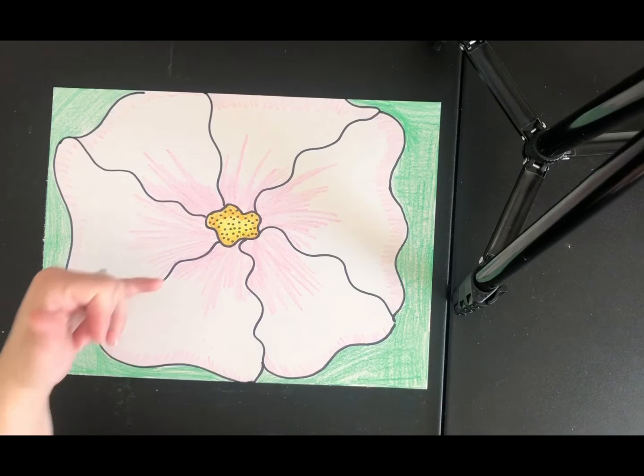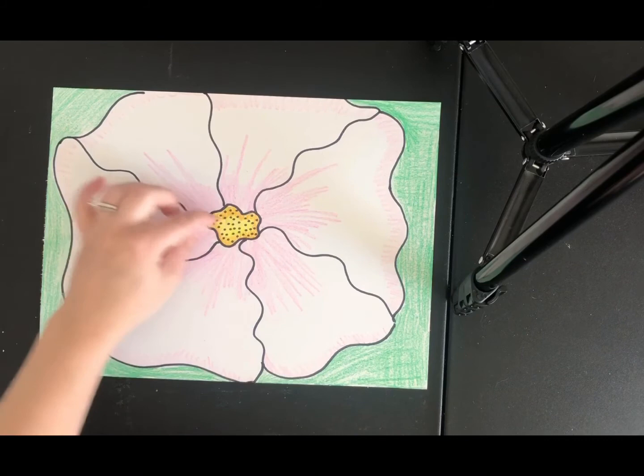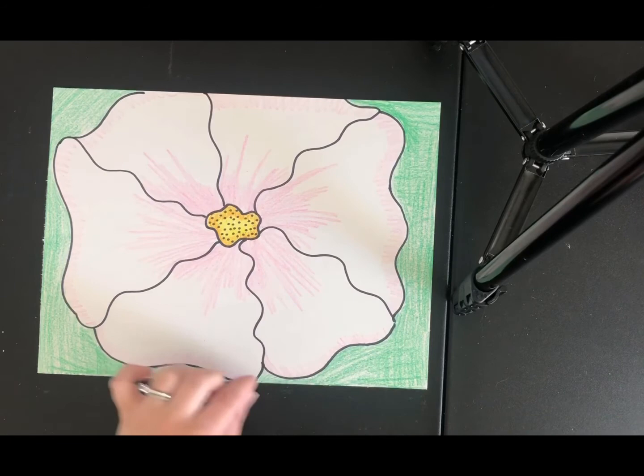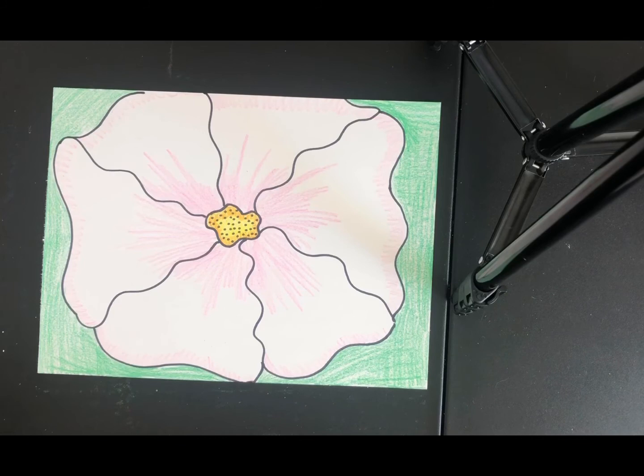So that is my Georgia O'Keeffe flower and you can see it was really just using these wiggly lines to create an organic shape in the middle and wiggly lines or wavy lines to create my petals, connecting those lines with a wavy line and then adding some color. So really you're using a lot of wavy wiggly lines to make your flower because flowers are considered an organic shape. They're part of nature.